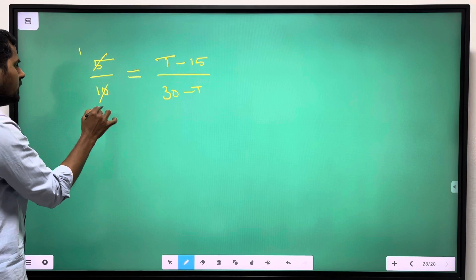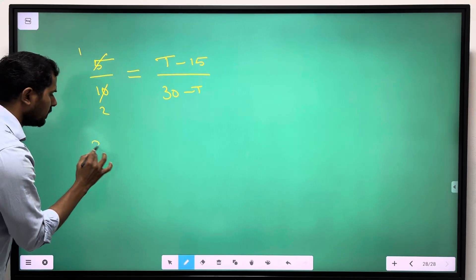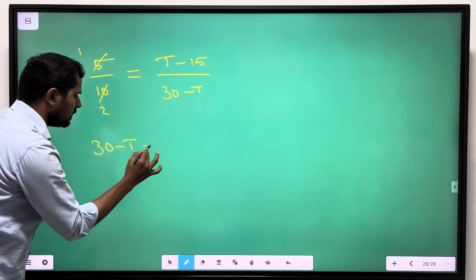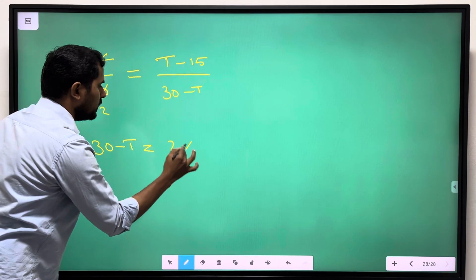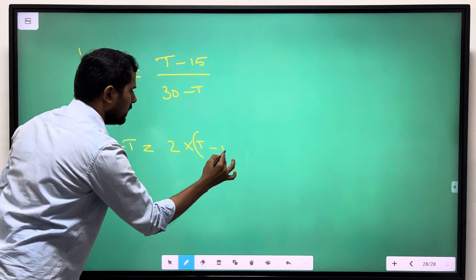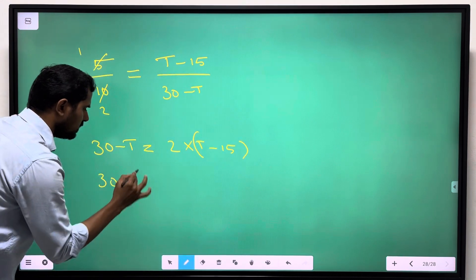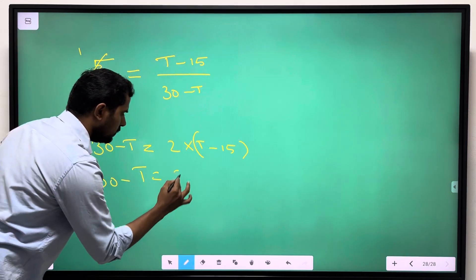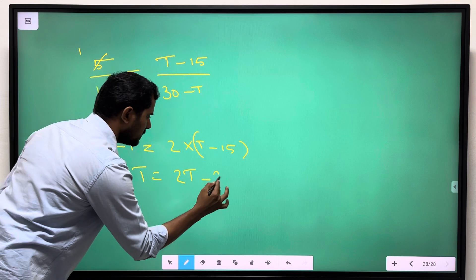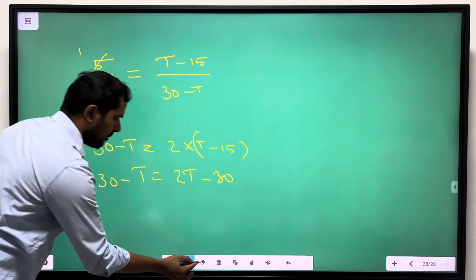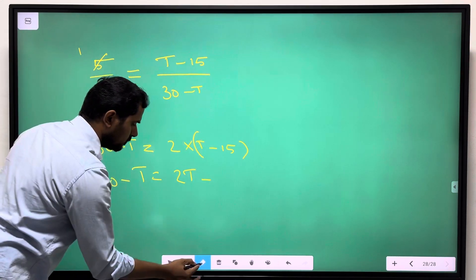1 by 2. Cross multiply. 30 minus t is equal to 2 into t minus 30.